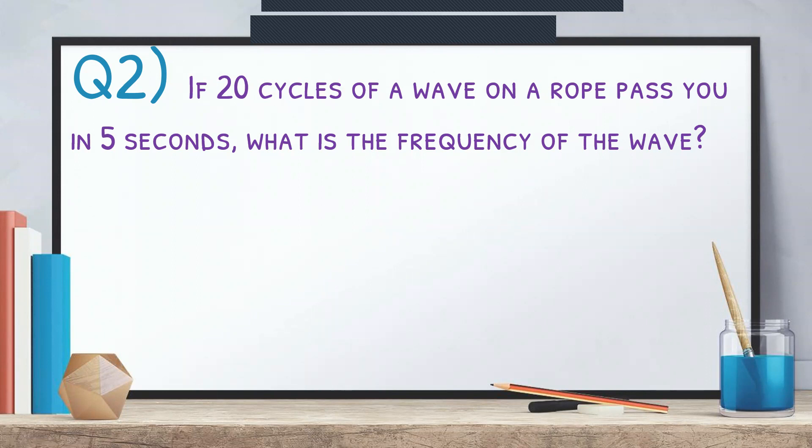Question two: if 20 cycles of a wave on a rope pass you in five seconds, what is the frequency of the wave? Let's write all givens first. Number of waves n equals 20, and time t equals five seconds. Writing all givens makes it much easier to calculate.